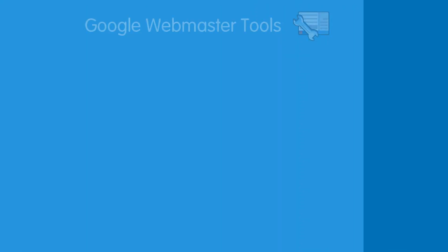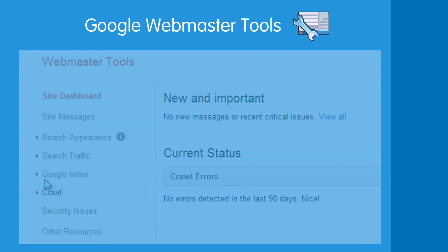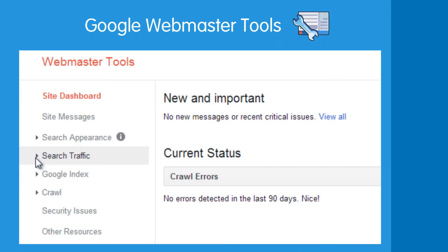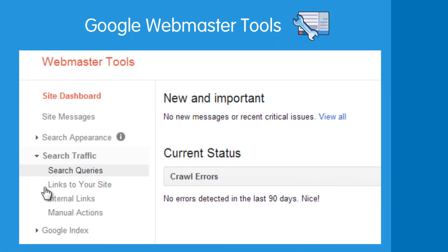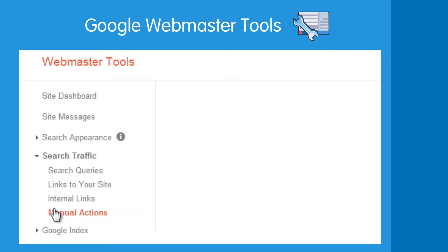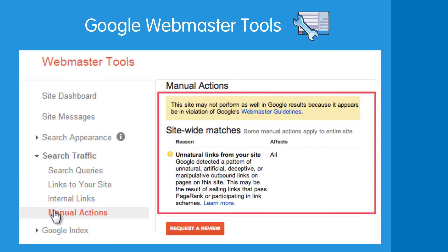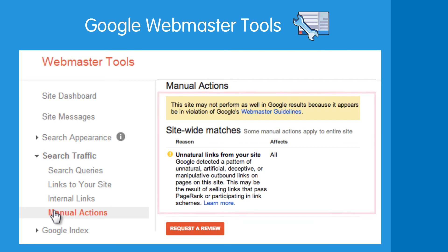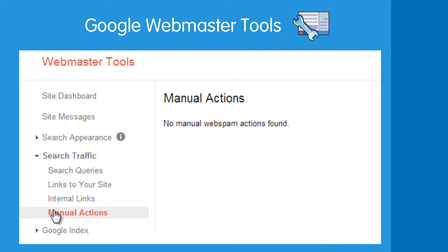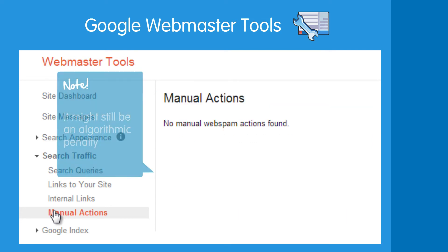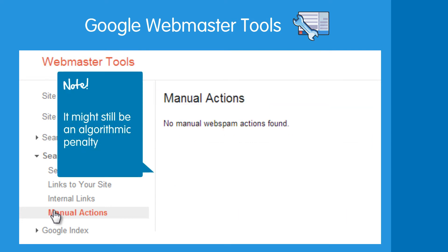If you're using Google Webmaster Tools, check the search traffic section and see if there's a message under manual actions. If there is one, then you know for sure that you've been penalised. If you don't have any messages there, it might still be an algorithmic penalty.